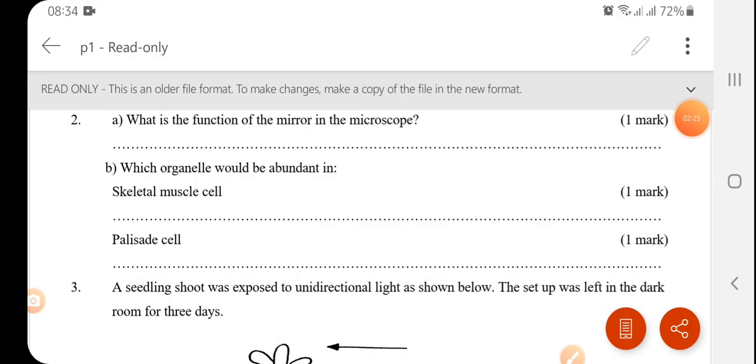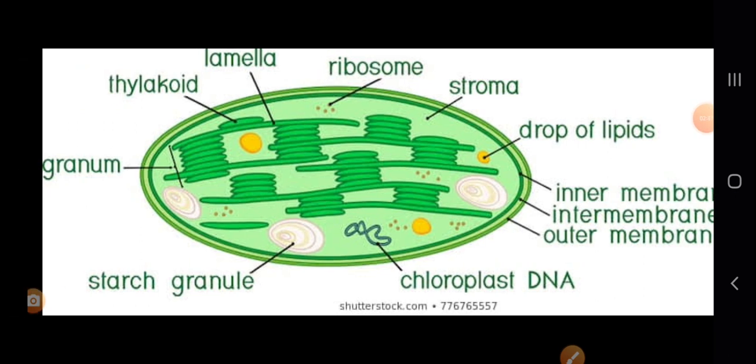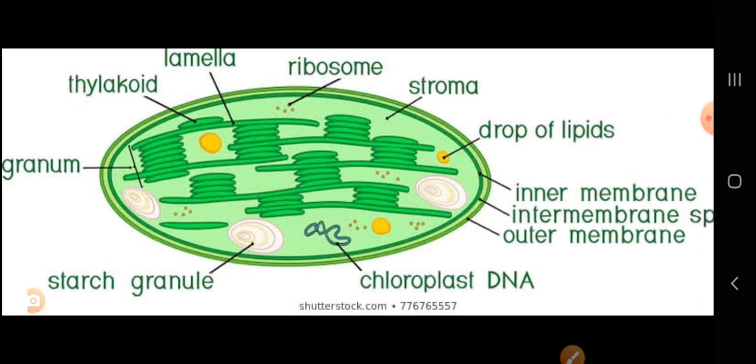The palisade cell, this is where photosynthesis take place. So the organelle that will be abundant here will be chloroplasts. So in the chloroplasts, the granum, this is where light stage occurs. And in the stroma, dark stage occurs.